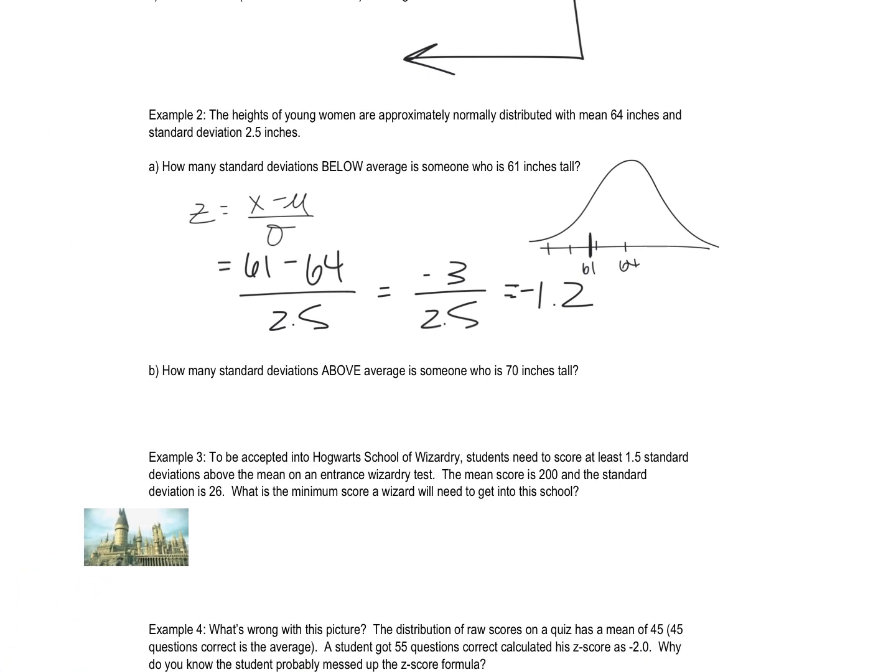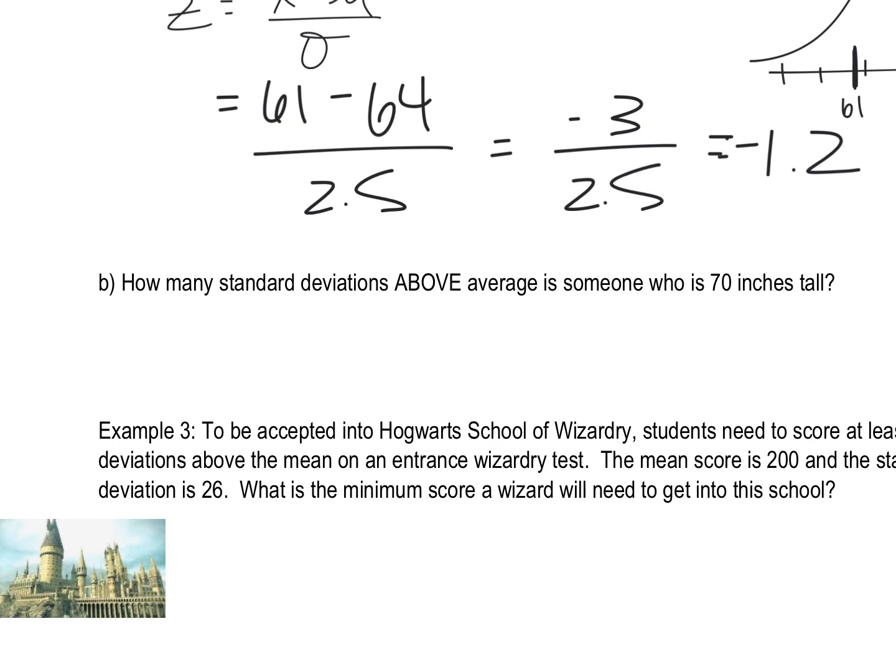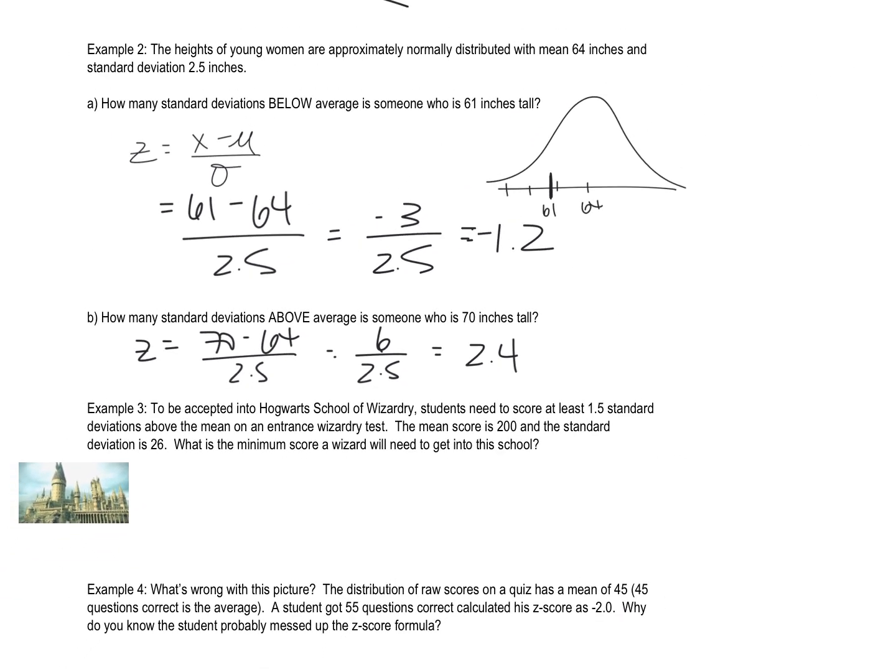How many standard deviations above average is someone who is 70 inches tall? So we're above average there because the average is 64, but again, I'm going to calculate a Z-score. 70 minus 64 over 2.5. That's 6 over 2.5. It's a positive number. It gives us 2.4.